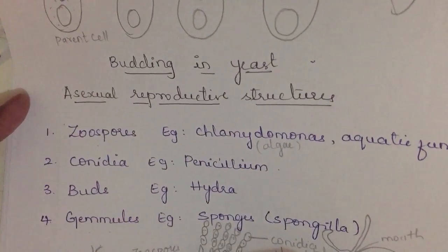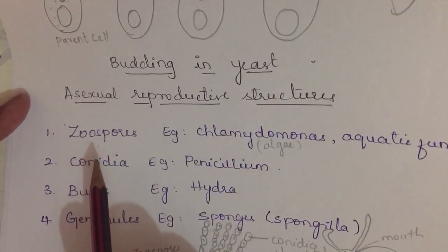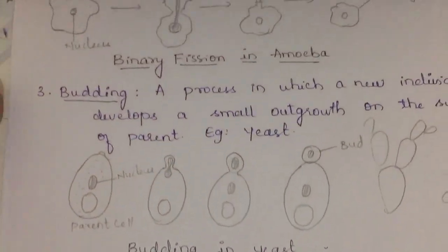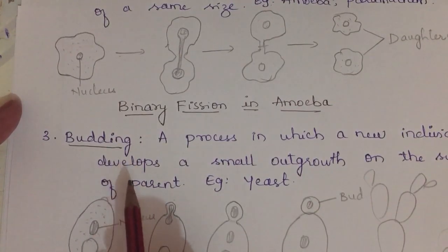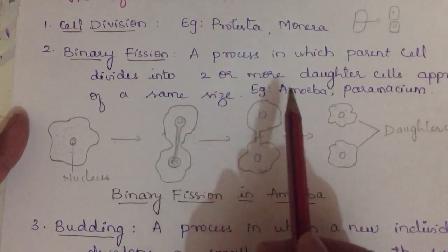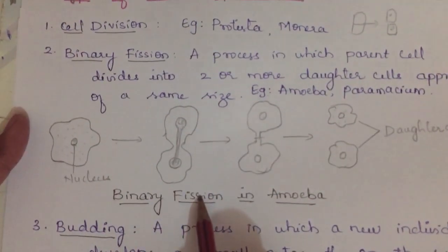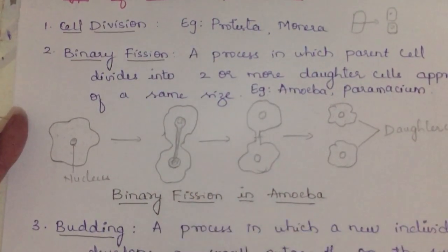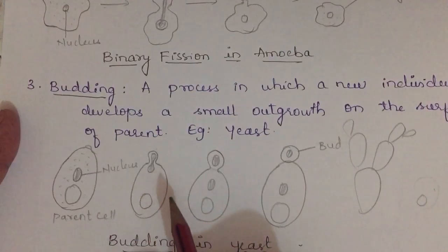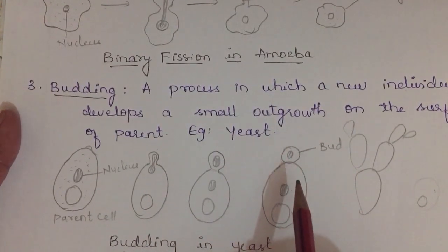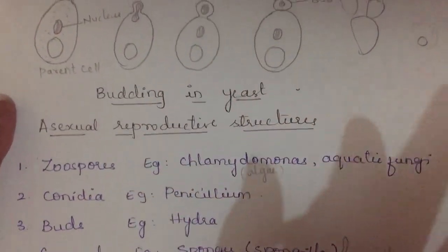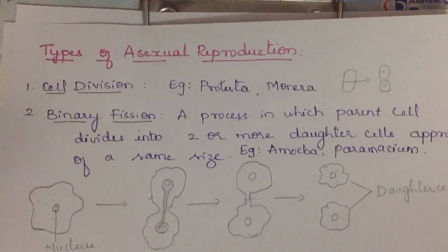Exam questions include: name the asexual reproductive structures of Chlamydomonas, Penicillium, hydra, and sponges. Questions may also ask about which organism produces zoospores, or ask you to explain budding or binary fission with diagrams — explaining karyokinesis and cytokinesis. All these topics — binary fission, budding, zoospores, conidia, buds, and gemmules — are very important.